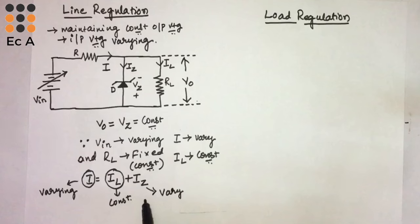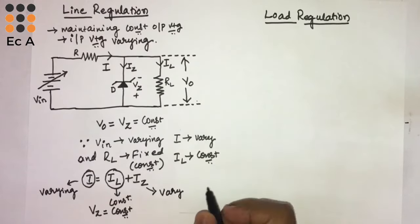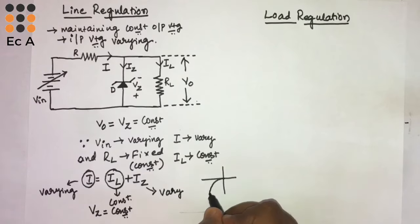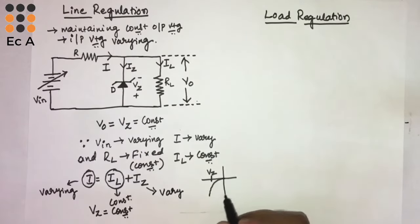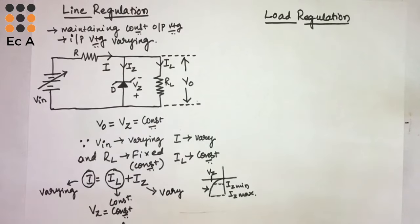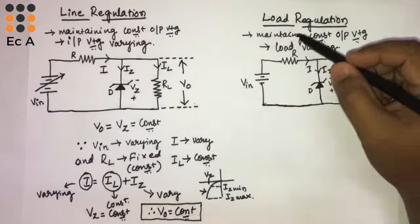Therefore I-Z should also vary. To maintain V-Z as constant, I-Z should vary between I-Z minimum and I-Z maximum. From the reverse characteristics of the zener diode, we know that to maintain a constant zener breakdown voltage V-Z, I-Z must vary between I-Z minimum and I-Z maximum. If I-Z varies between these two values, V-Z will be constant, and therefore V-out will also be constant. This is how output voltage is maintained constant in line regulation.